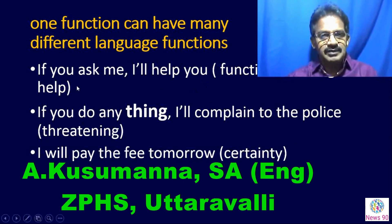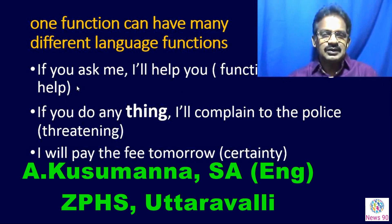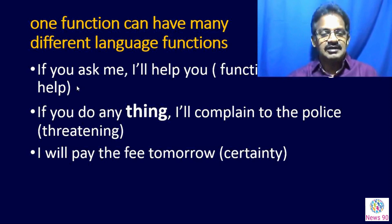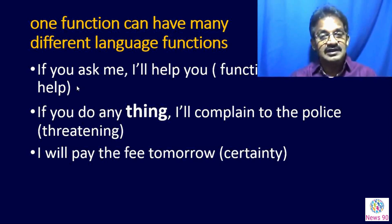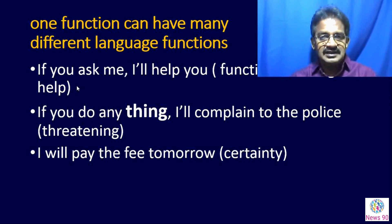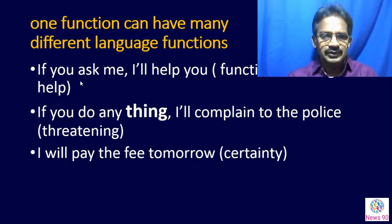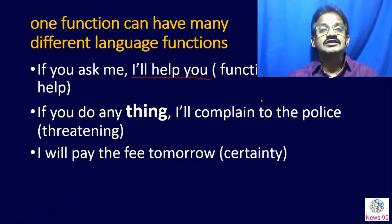If you ask me, I will help you. Now consider another sentence: 'If you do anything, I will complain to the police.' How is the sense and mood of this sentence? It is like threatening. So 'I will complain to the police' is the function of threatening, while 'I will help you' is the function of offering help. You can observe that 'I will help you' is offering help, and 'I will complain to the police station' is threatening.